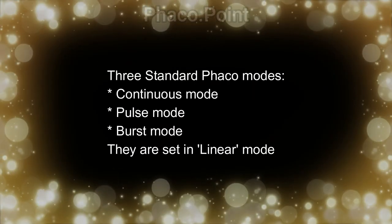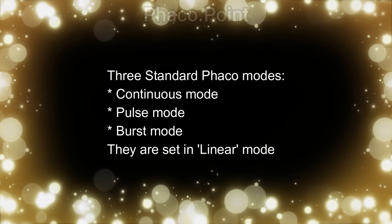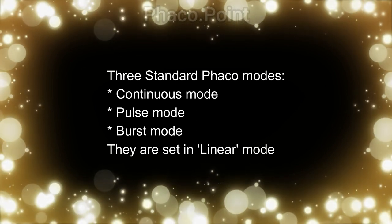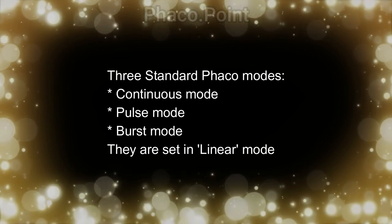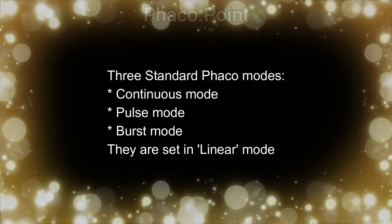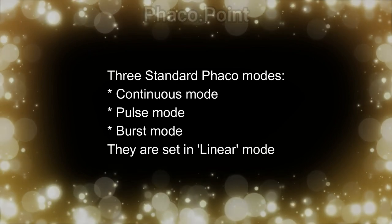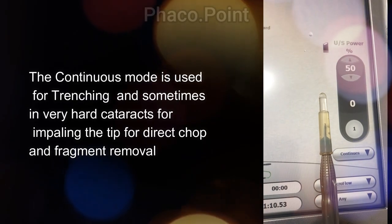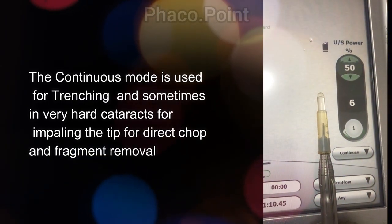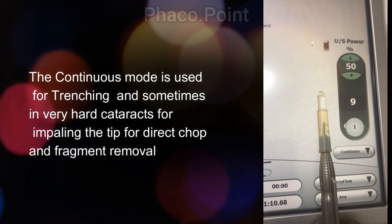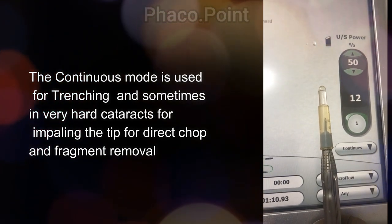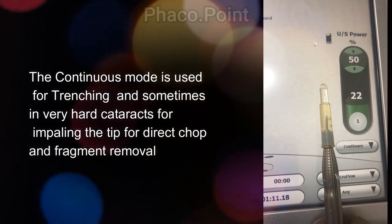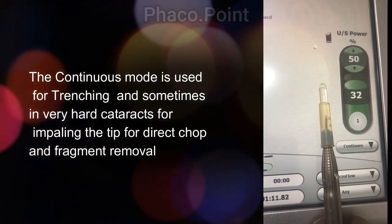Now that we understand how power delivery happens, there are three significant modes of power delivery. One is the continuous mode, the pulse mode, and the burst mode, and by default they are almost always set to function in a linear fashion. The continuous mode is the most basic mode where power is continuously delivered. It is used for trenching primarily and sometimes in very hard cataracts can be used to impale the FACO tip.